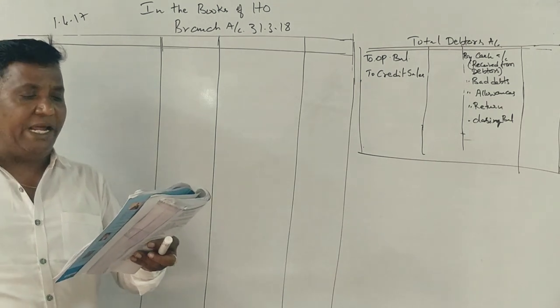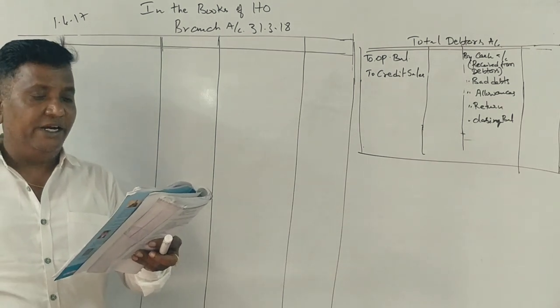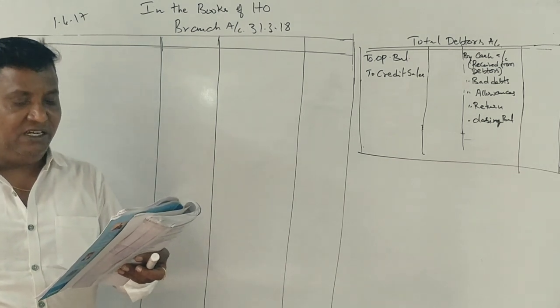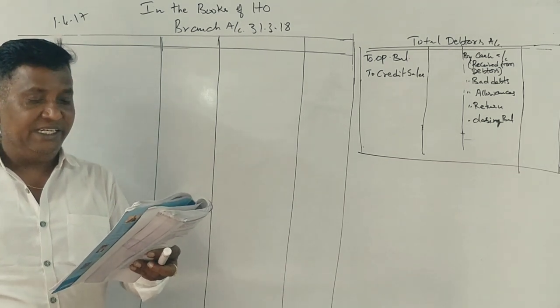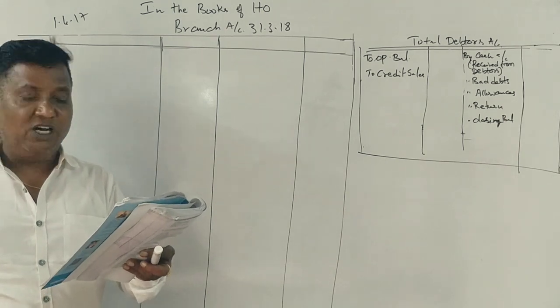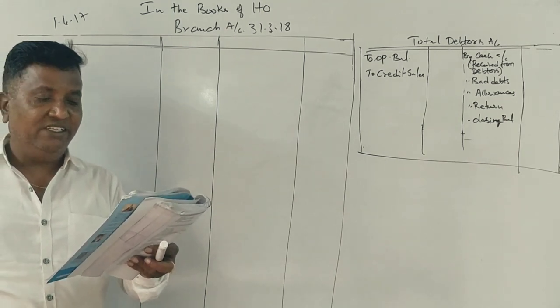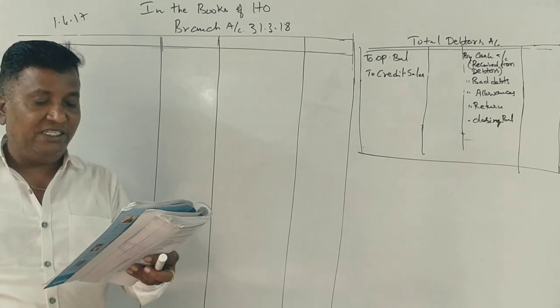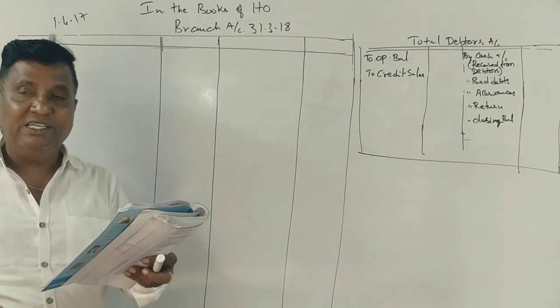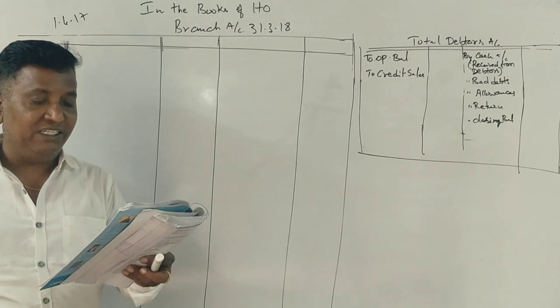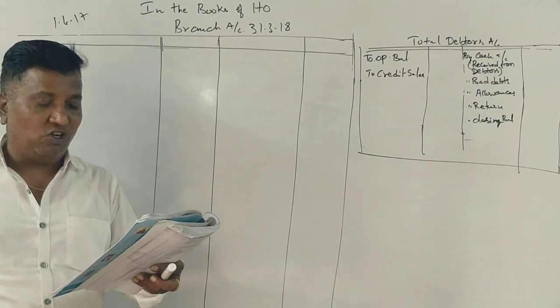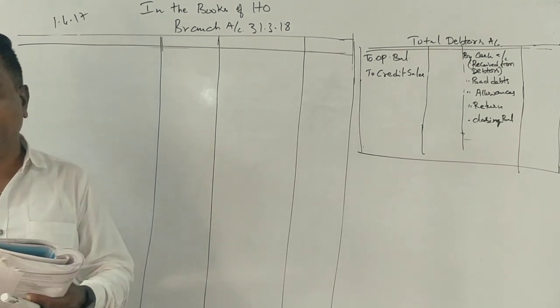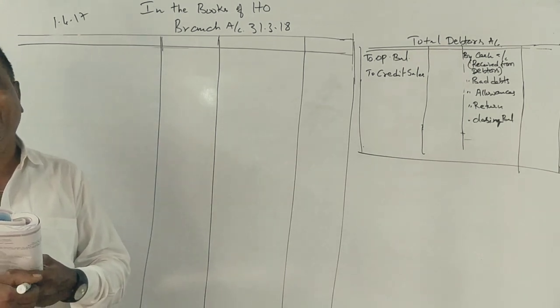Goods sent to branch at invoice price, returns to head office at invoice price, stock at branch 1-4-17, credit sales for the year, cash sales for the year, debtors 1-4-17, cash received from debtor accounts, discount allowed to customers, bad debts written off, returns from customers, rent and rates, salary and wages, sundry expenses, stock at branch March 2018. Prepare Gathak branch account and branch debtors account for the year ending 31st March 2018.